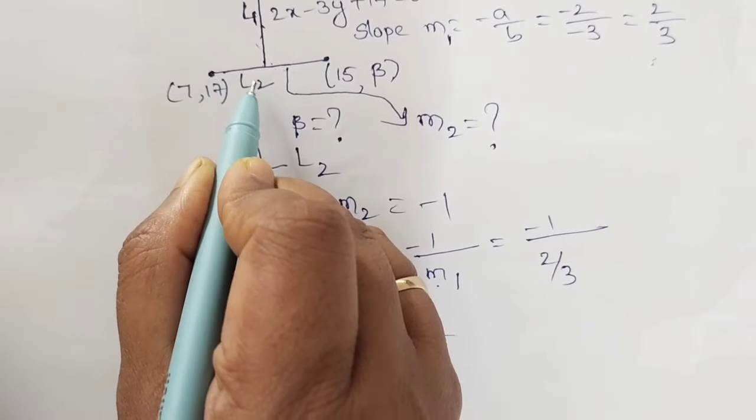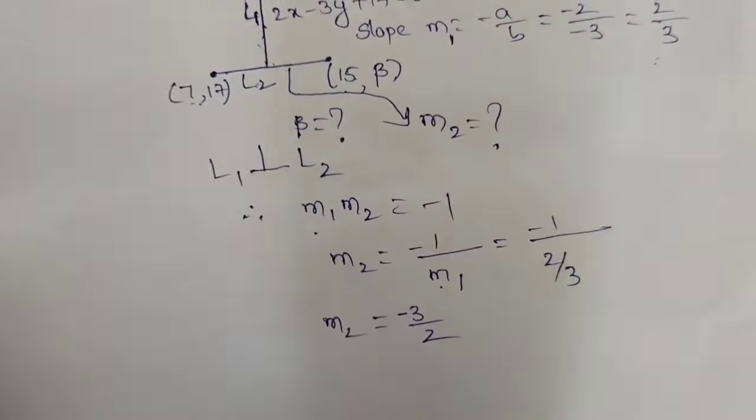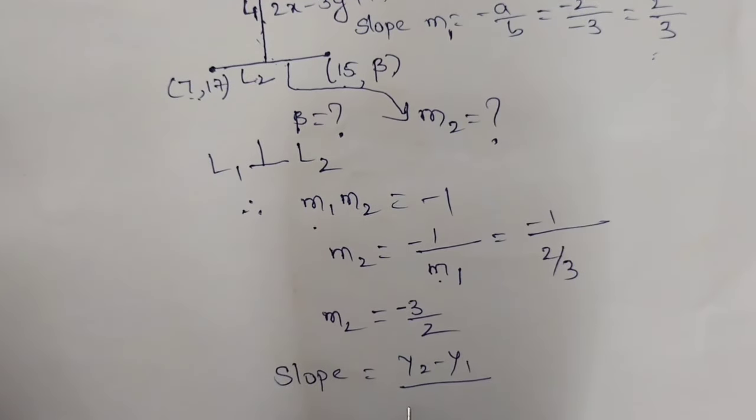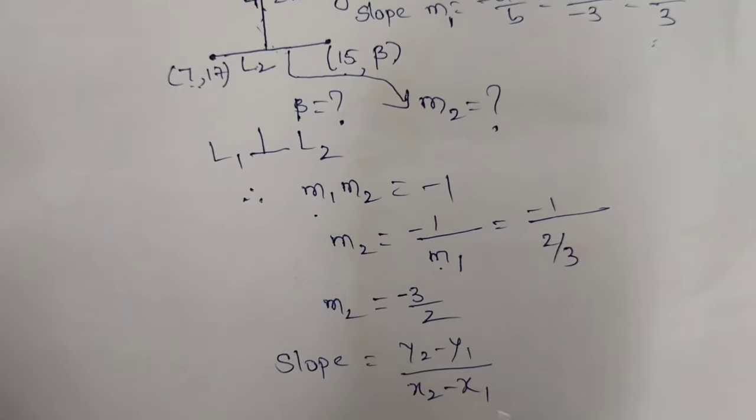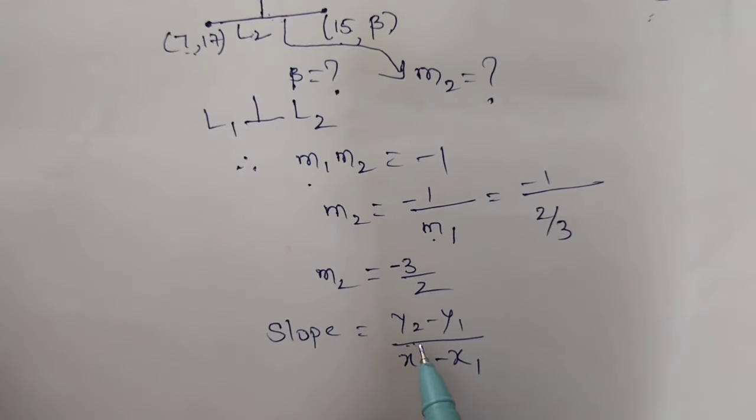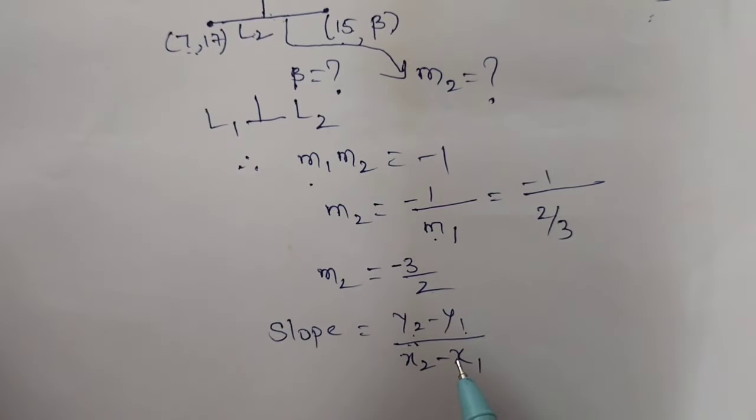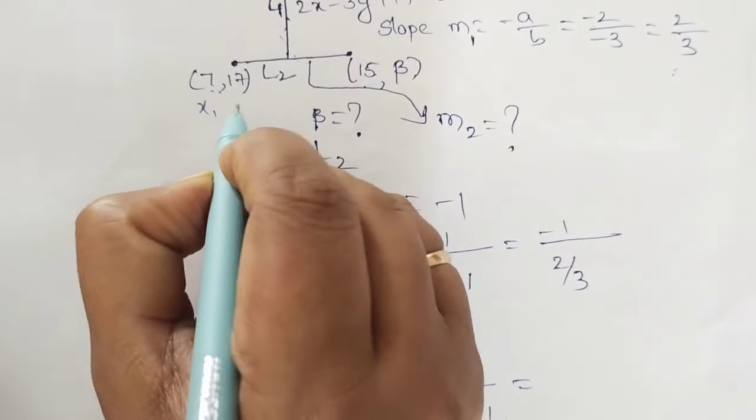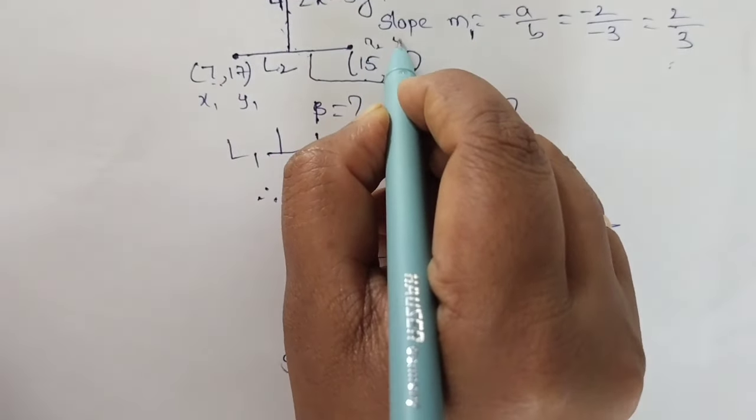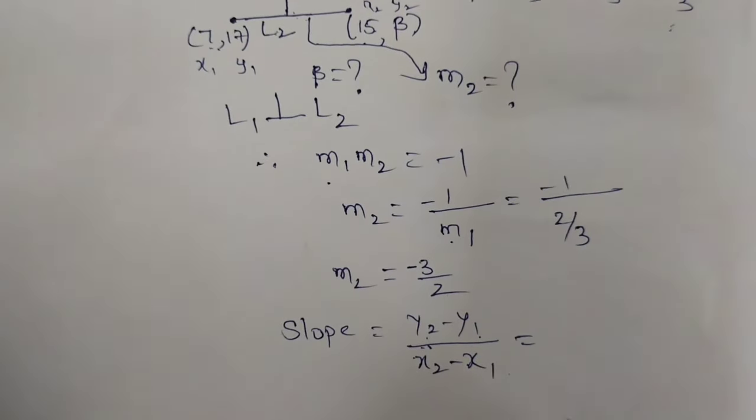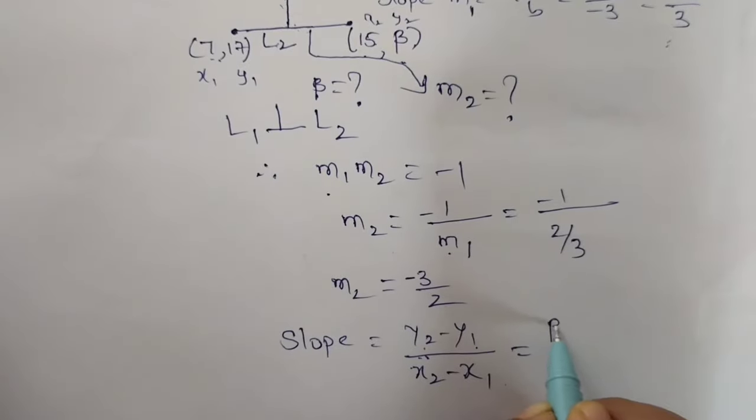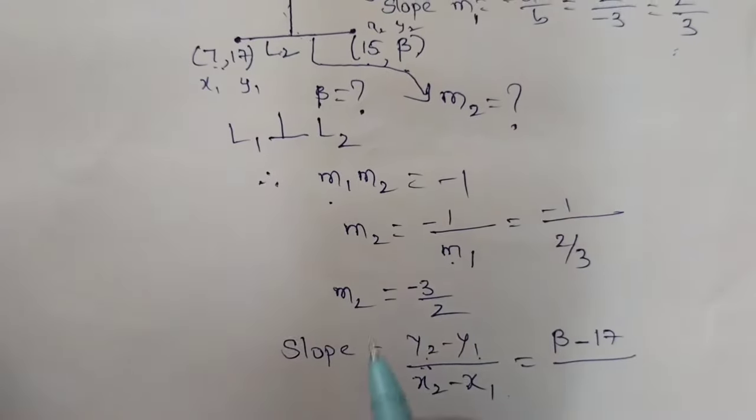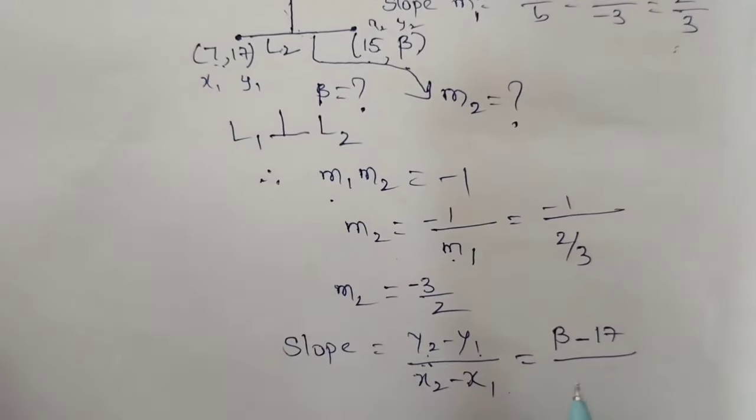The slope formula using points is (y2 minus y1) by (x2 minus x1). First we identify x1, y1 and x2, y2 from the points. So x1, y1 are 7 and 17, and these are x2, y2. Now substitute those values in the formula: y2 is beta minus y1 is 17, by x2 is 15 minus 7.